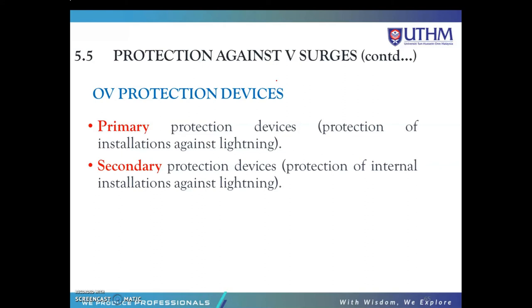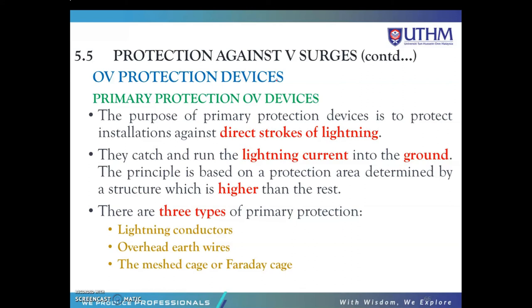For protection against voltage surge, we have primary protection devices — protection of installations against direct lightning — and secondary protection devices — protection of internal installations against lightning. The purpose of primary protection devices is to protect the installation against direct strokes of lightning by catching and running the lightning current into the ground. The principle is based on a protection area determined by a structure which is higher than the rest. There are three types: lightning conductors, overhead earth wires, and mesh cage or Faraday cage.